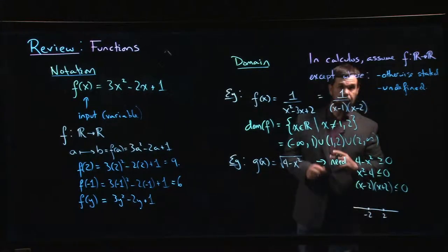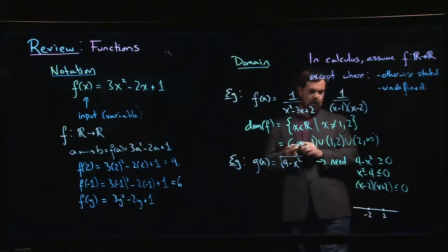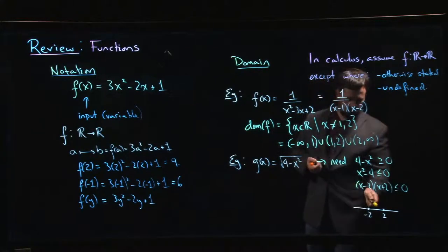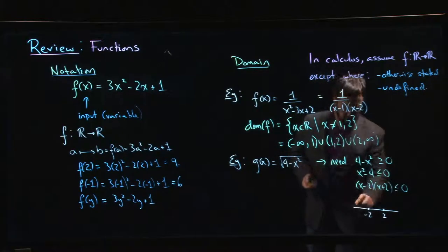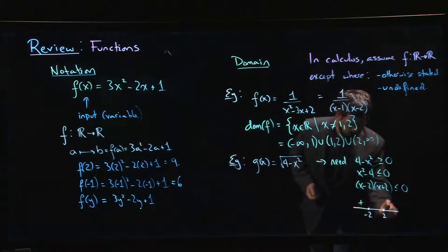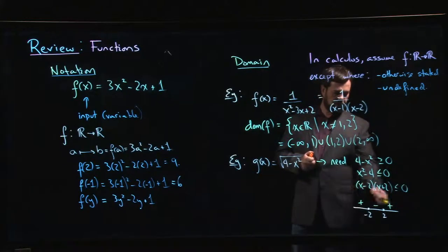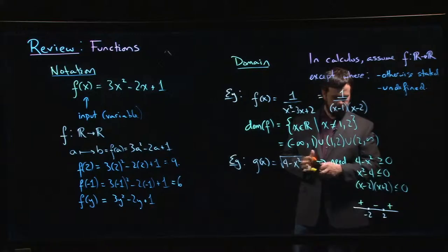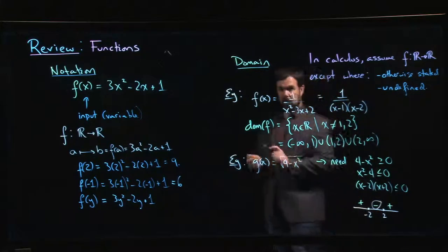And in each of these three intervals that results, we can do test values and we can check, and we find that it's positive here, it's positive here, and it's negative in between. And we want the outcome to be less than or equal to zero, so that means we're looking for the minus sign—we want it to be negative.